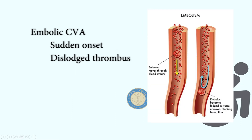Next would be the embolic stroke, which is due to a dislodged thrombus, also known as an embolus. It has a sudden onset and its rescue drug is thrombolytics, same as with thrombotic stroke.